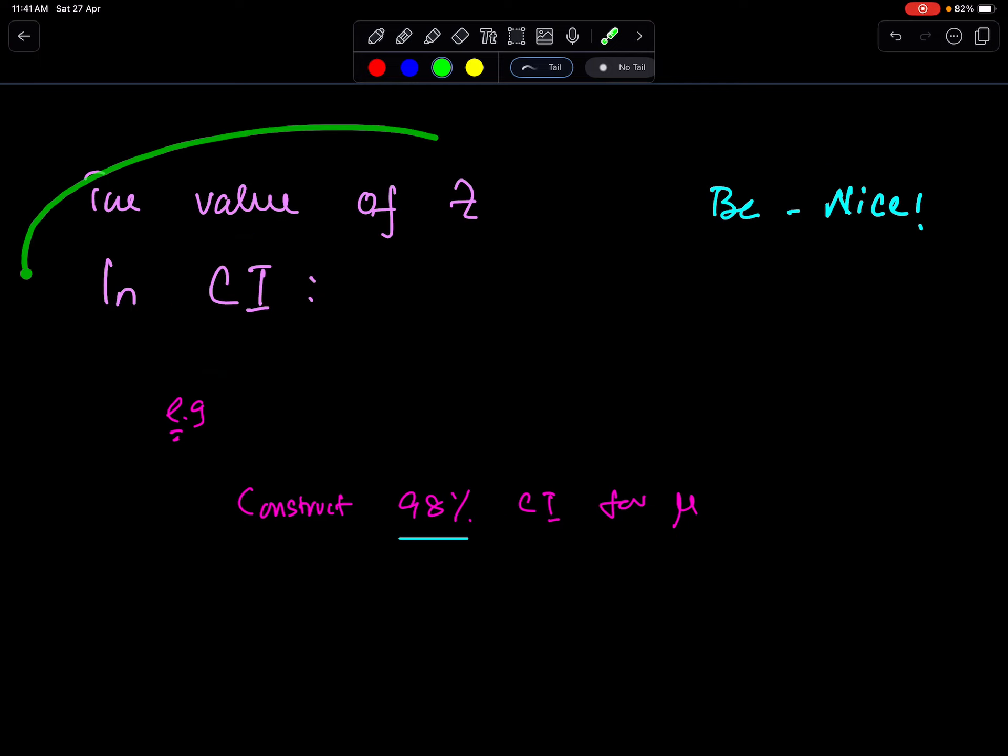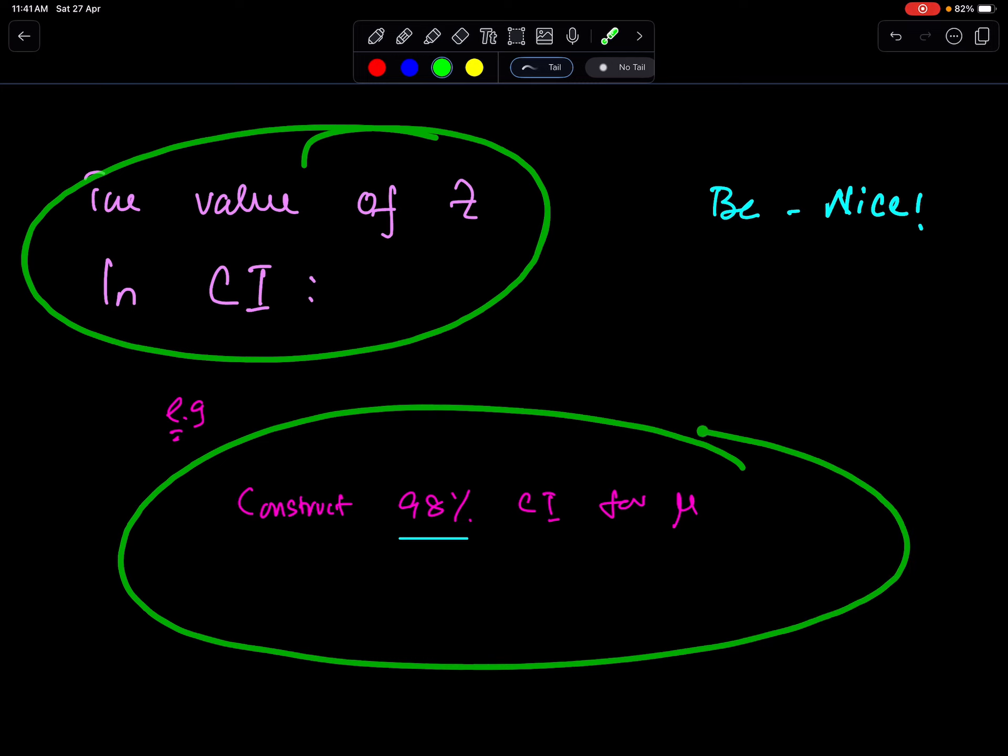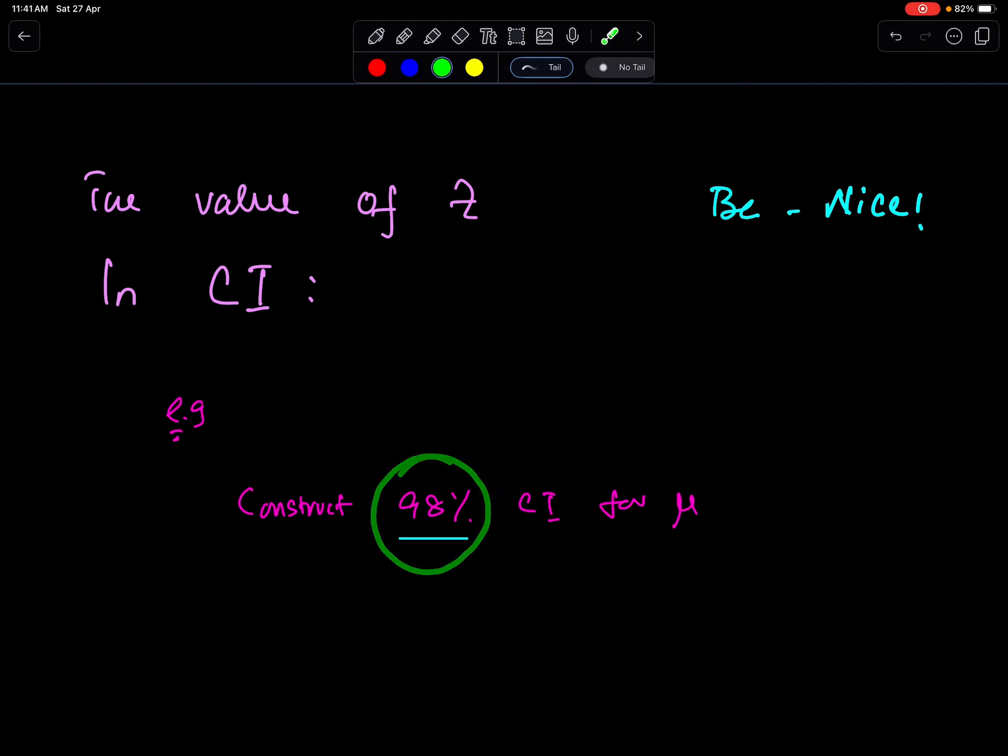We will understand this concept with the help of this example: Construct 98% confidence interval for mu population mean. 98% means the confidence level alpha percent. So this is 98%.